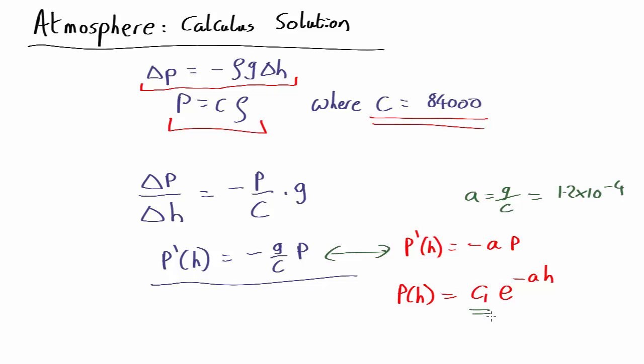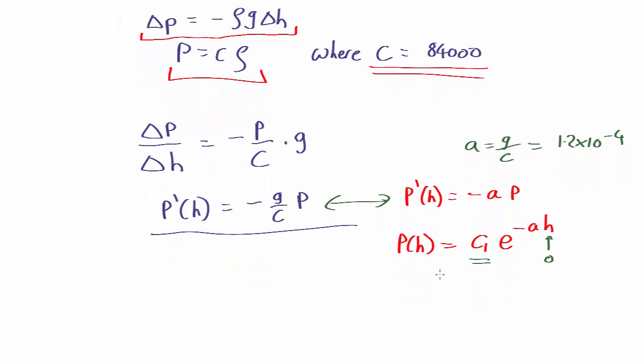To work out the constant of integration here, we work that out by setting our starting conditions. We know that at height zero, the pressure is sea level pressure, 101,000 pascals. So e to the zero is 1, so that means that C1 equals 101,000 pascals, the pressure at sea level.